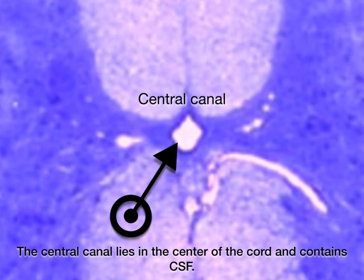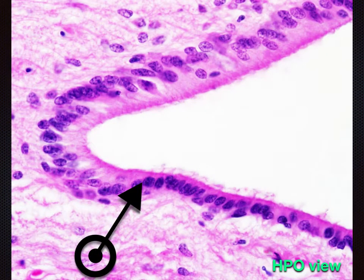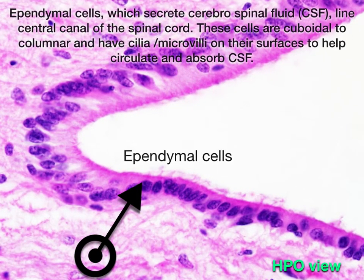The central canal lies in the center of the cord and contains CSF. Ependymal cells, which secrete CSF, line the central canal of the spinal cord. These cells are cuboidal to columnar in shape and have cilia or microvilli on their surfaces to help circulate and absorb CSF.